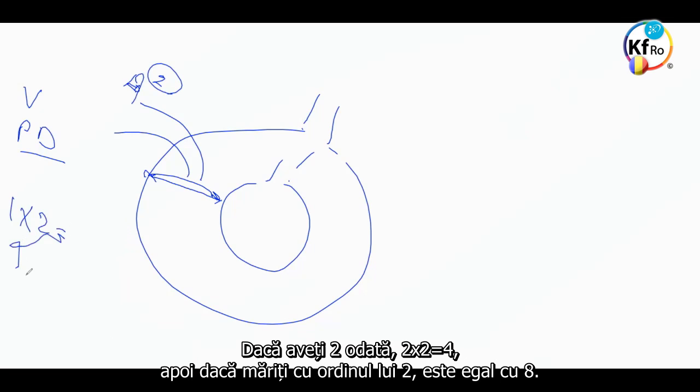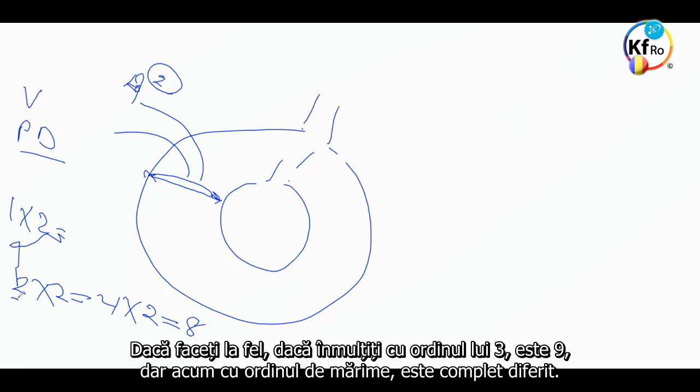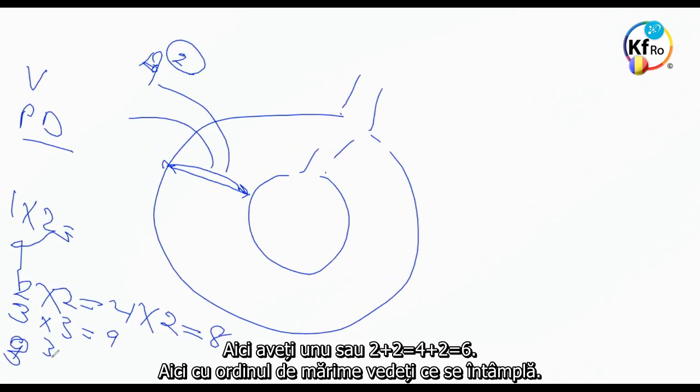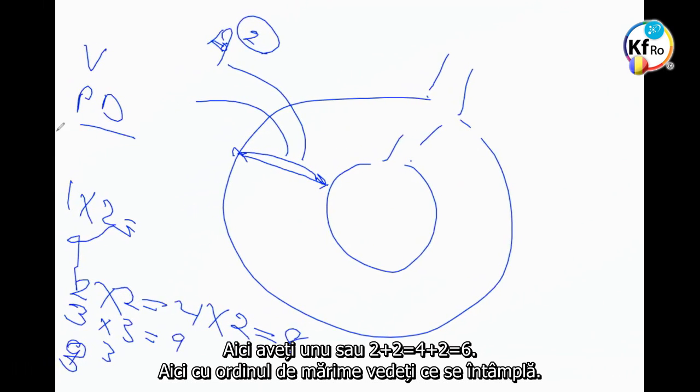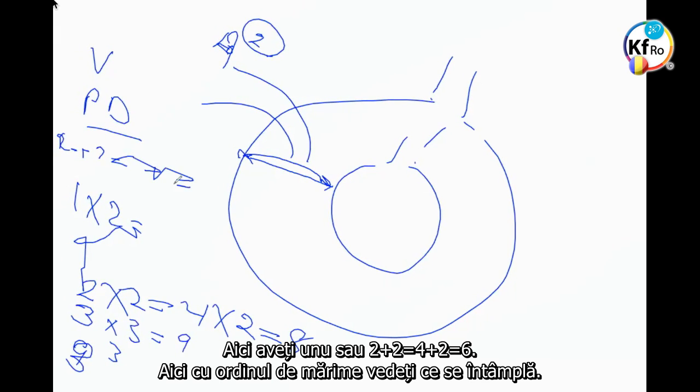If you had two, one - two by two is four. And then, if you increase the height more by two, it's eight. If you drop it by order of three, it's nine. But now, with order of magnitude, you go totally different. Here you go: one or two, plus two is four, plus two is six.